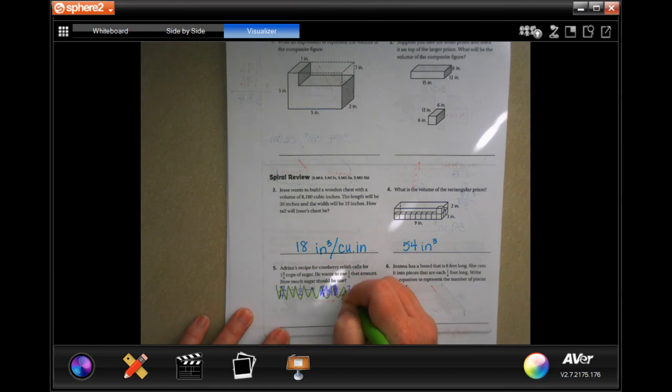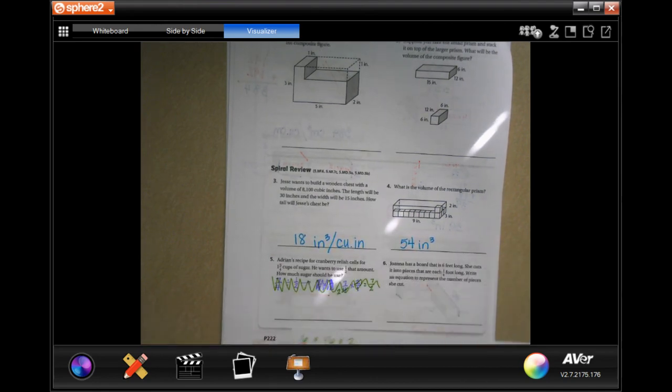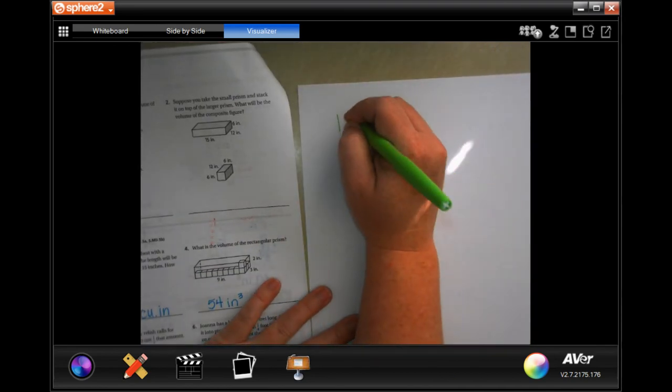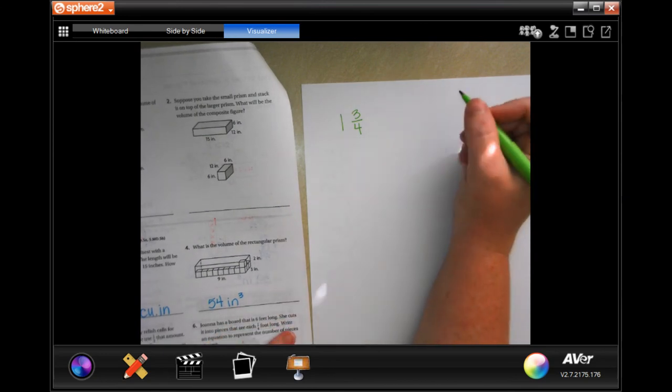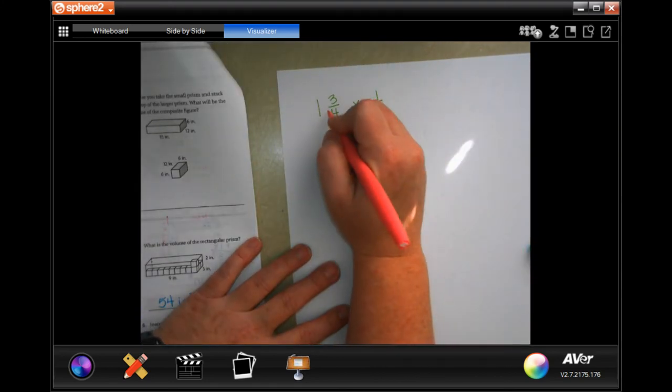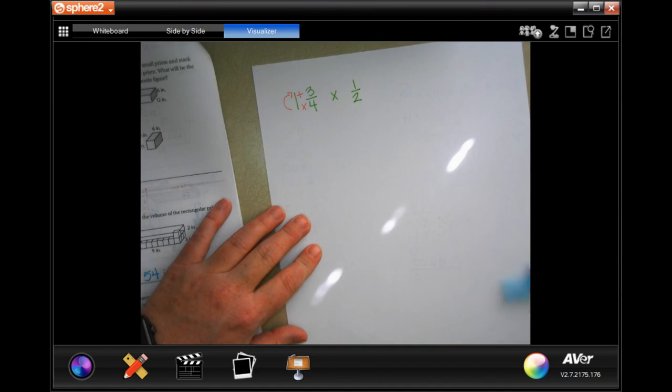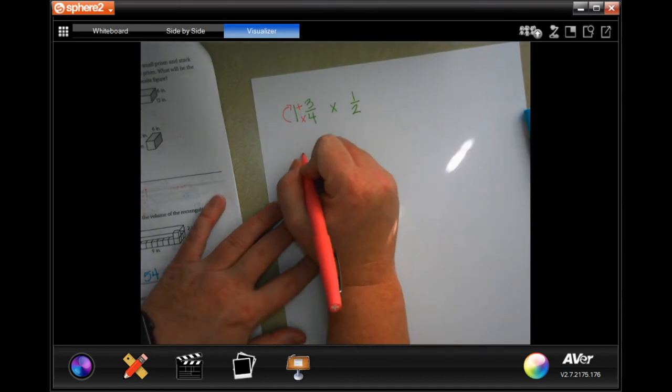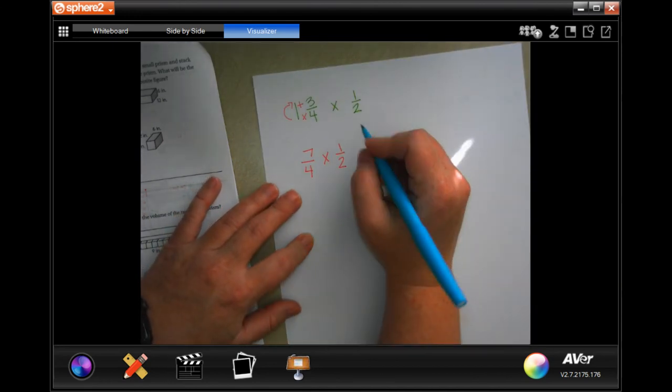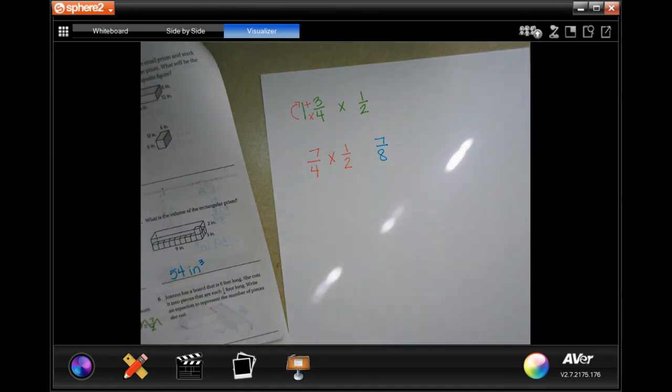I did this wrong, guys. I'm really sorry. Let me do it on scrap paper. 1 and 3/4, they want to use half of that. Of means multiply. I'm still going to turn this into dead man, which is 7/4, and now I want half of that. I can't cross cancel anything, so I'm going to get 7/8. Seven-eighths of a cup. Sorry about that, y'all.